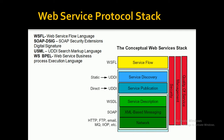The next layer on top of the network layer is the XML-based messaging layer, also called the XML messaging layer or packaging layer. This layer is responsible for encoding the messages in a common XML format so that messages can be understood at either end — that is, the client and server.